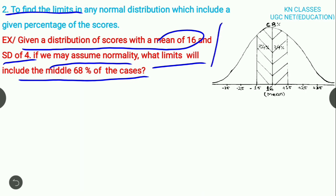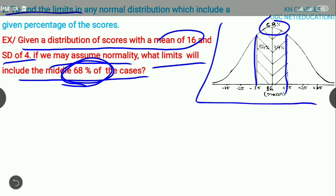Here the diagram will come. Let us understand the question. The question asks for the middle 68% of the cases. What limits will come? Look at the diagram - the middle 68% of the cases will fall in this limit, which means we need to find out this point and this point.